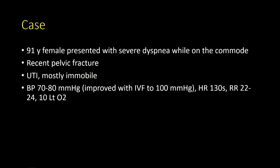This is a 91-year-old female who presented with symptomatic shortness of breath. She had recently been sent home after a pelvic fracture and was in rehab. In rehab she had a UTI and was mostly immobile. When she came to the ER she was hypotensive, given fluids, and her blood pressure improved. Her heart rate was slightly high — she was tachycardic sinus — and she was tachypneic, requiring 10 liters of oxygen to maintain saturations over 90%.